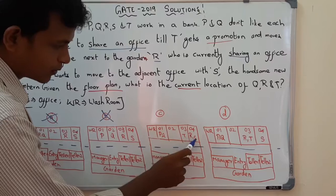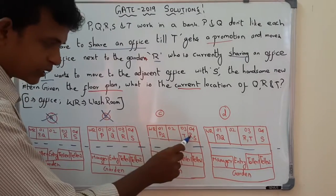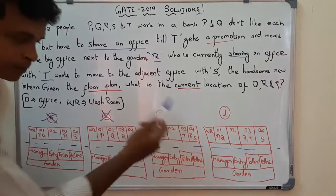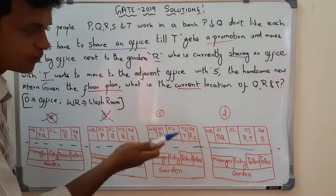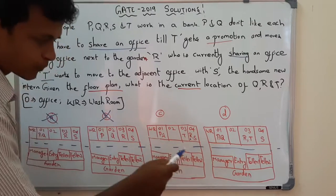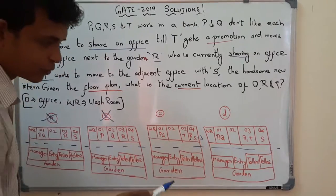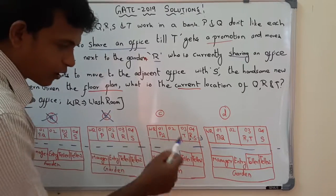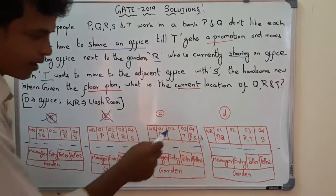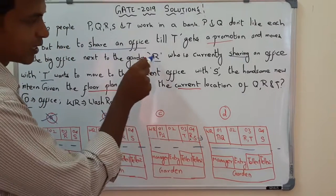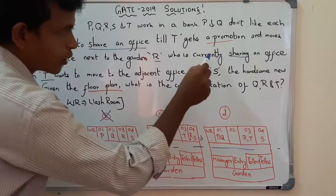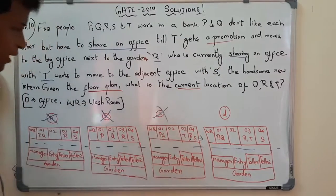In option A's floor plan, R is together with S instead. R wants to move to the office where S is present because S is the handsome new intern — so I conclude that R is female. She wants to move to office number 4 where S is present, but currently R must be sharing an office with T. So option A doesn't satisfy this condition and is eliminated.